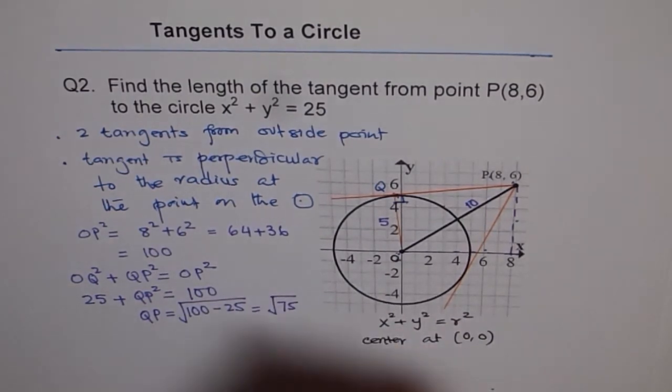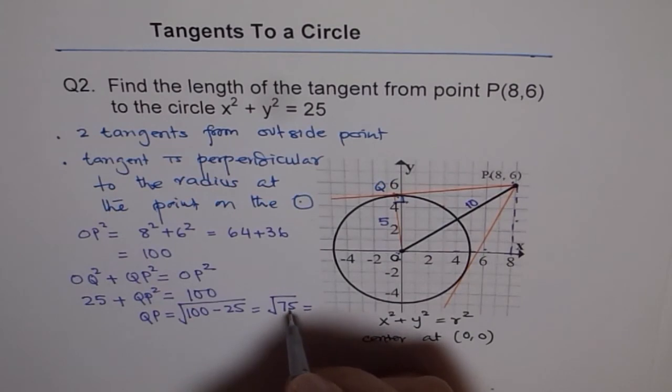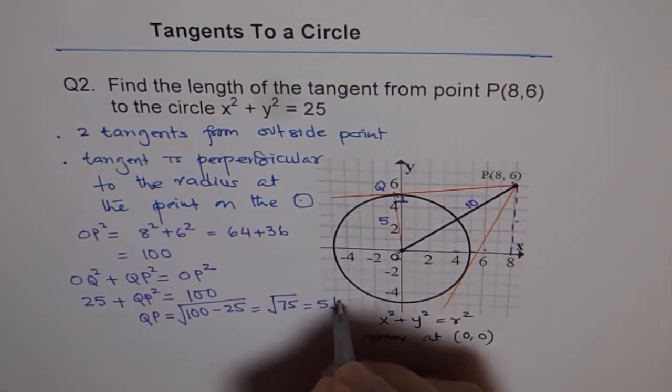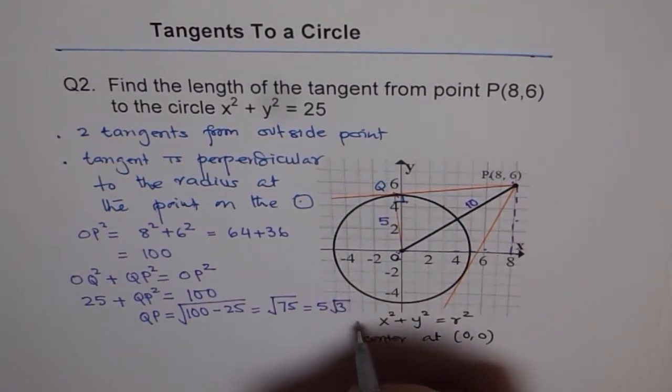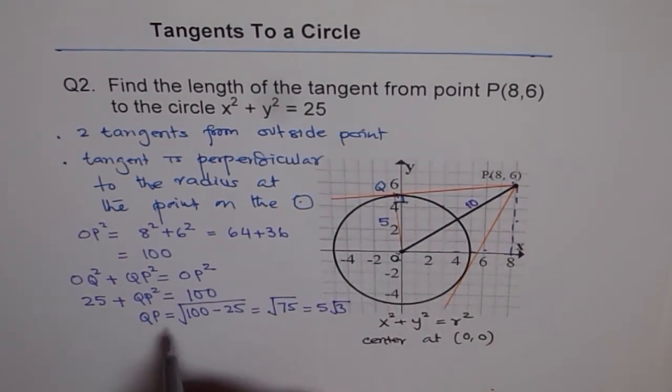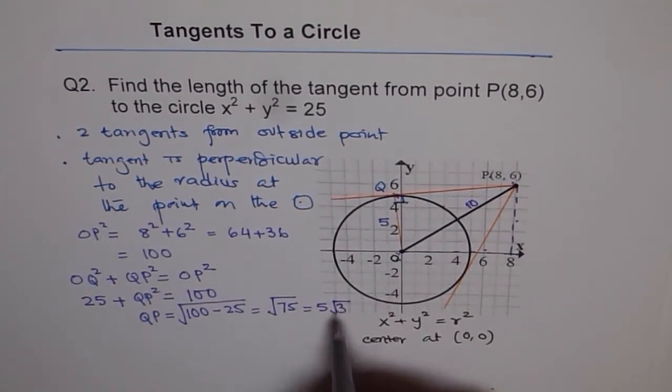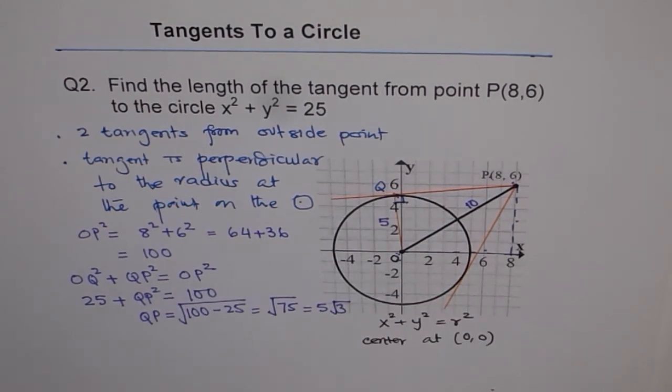So the exact answer for this: 75 = 25 × 3, so √75 = 5√3. So we know that QP will be 5√3 as the exact answer.